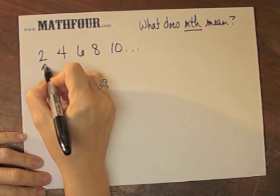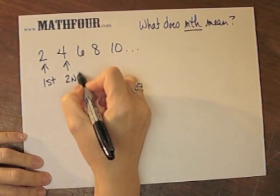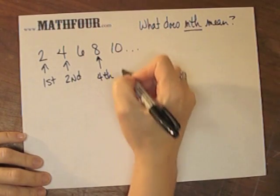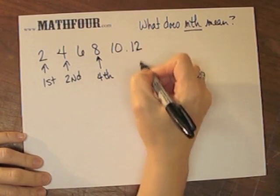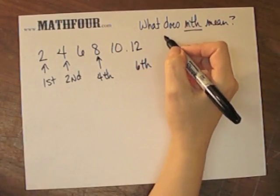So this is the first term, this is the second, third, fourth, fifth, sixth, and so on. I'm not writing every one so I can have more space.